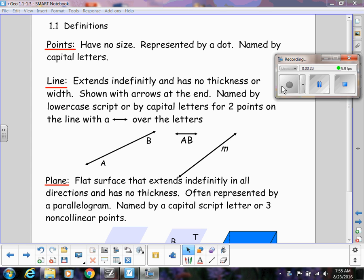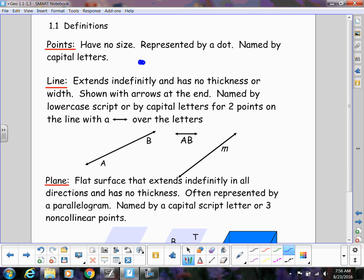First of all, points. Points have no size, and you've seen them represented by a dot. And then we usually name them by a capital letter, so I could call this point A or another point B.